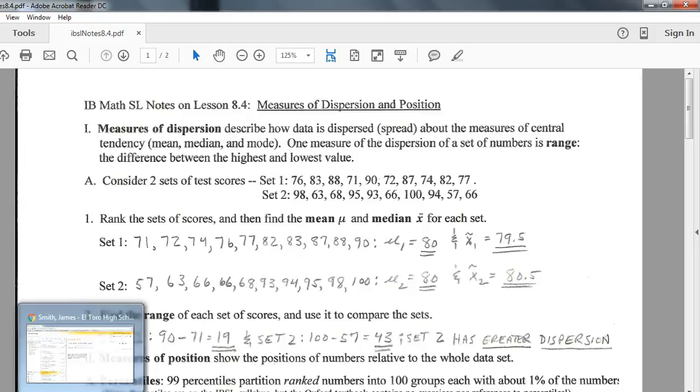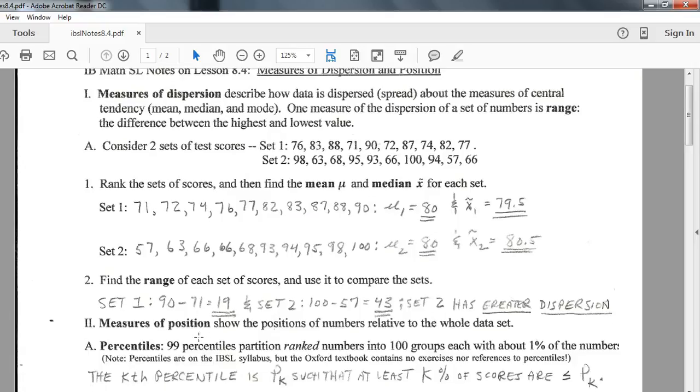So the range I brought up in an earlier lesson, but that's simply the maximum score minus the minimum score. You do get those on your calculator on the same page that we got all the other statistical information so far. We saw that in an earlier video.